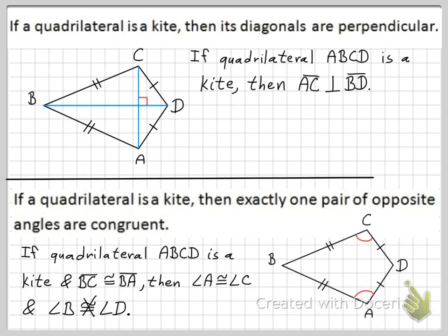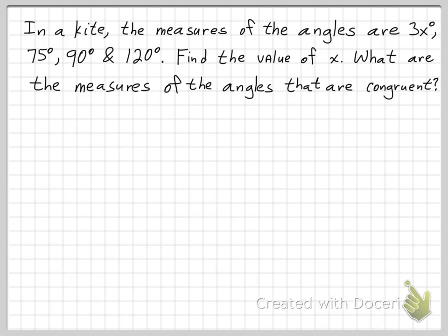What kind of problems might you expect regarding kites? Here's one: in a kite, the measures of the angles are 3x degrees, 75 degrees, 90 degrees, and 120 degrees. Find the value of x. Then, what are the measures of the angles that are congruent?